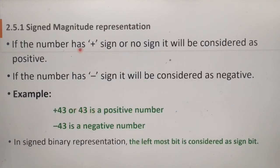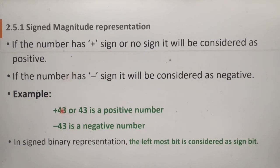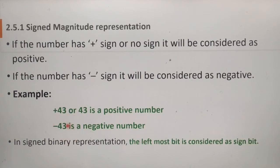In signed magnitude representation, if the number has a plus sign or no sign, it will be considered as positive. A number with a plus sign or no sign is called a positive number. If the number has a minus sign, it will be considered a negative number.